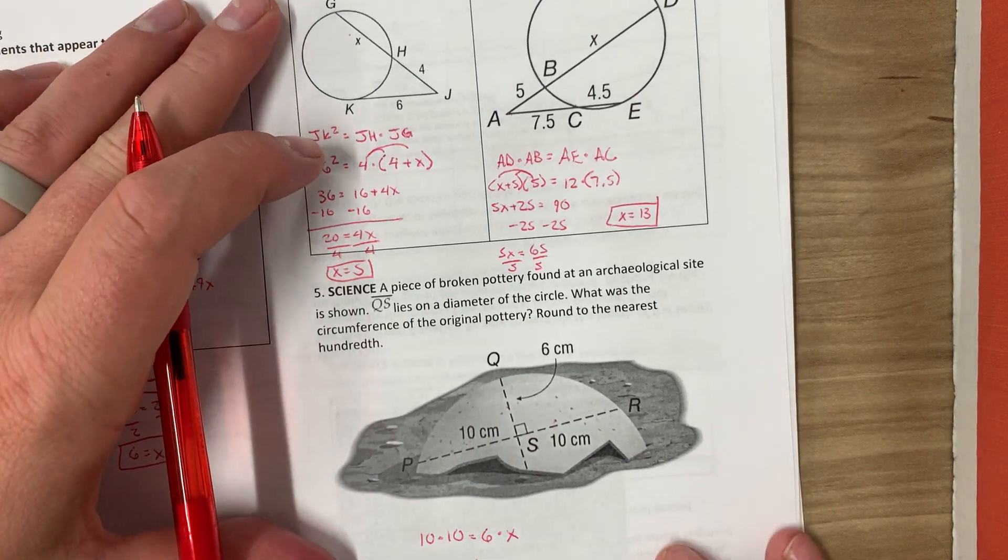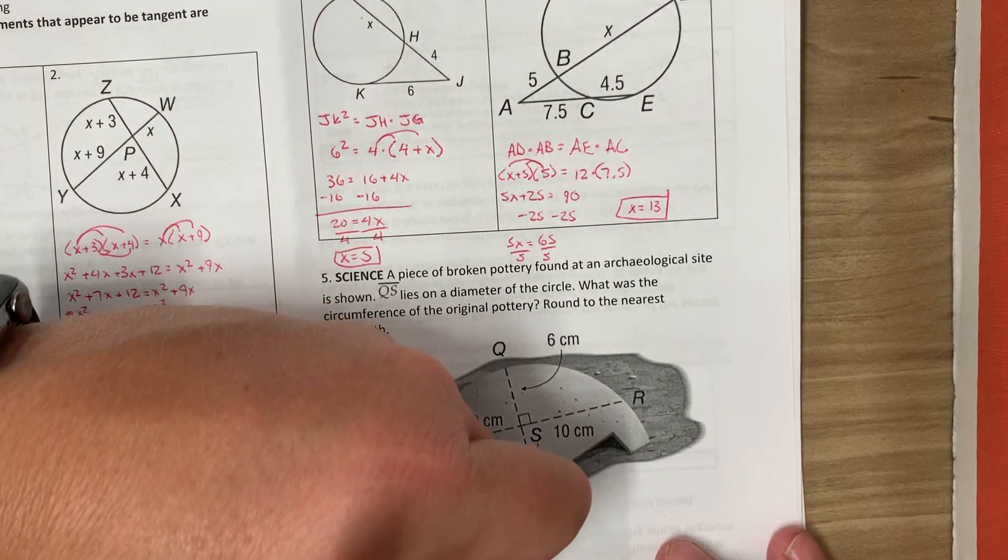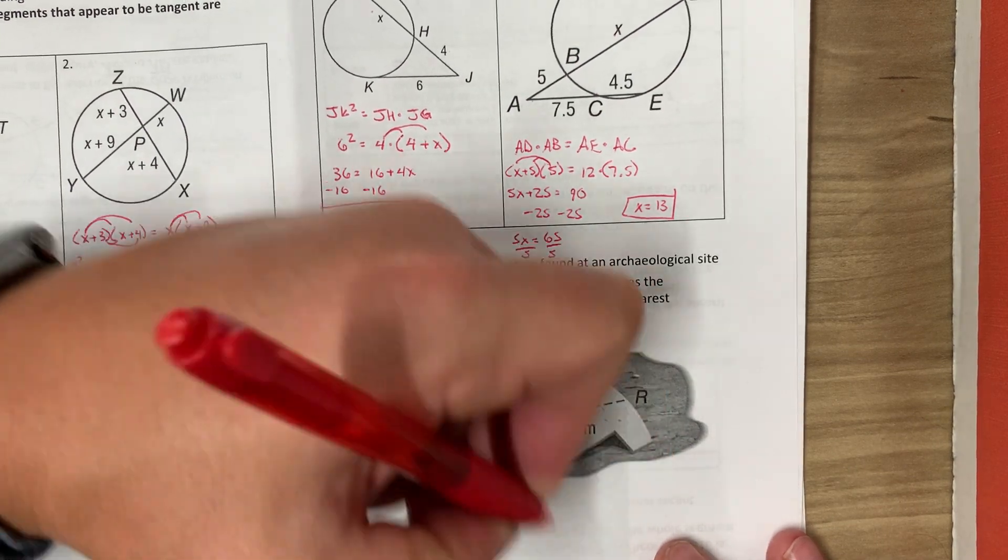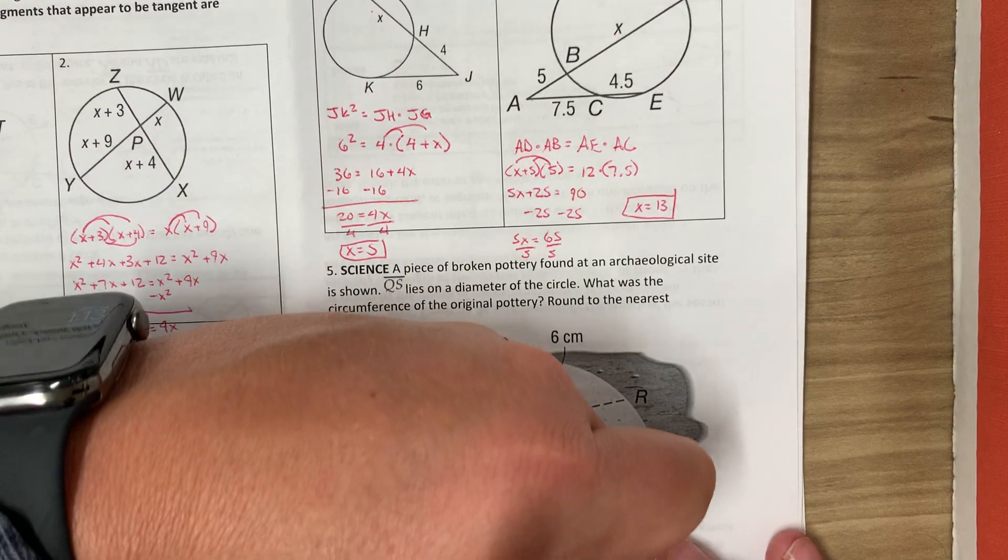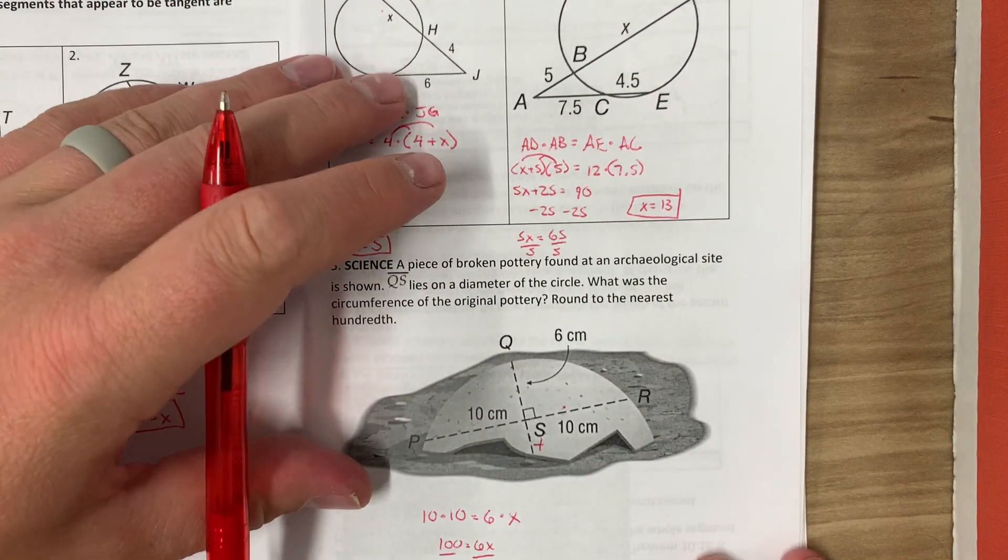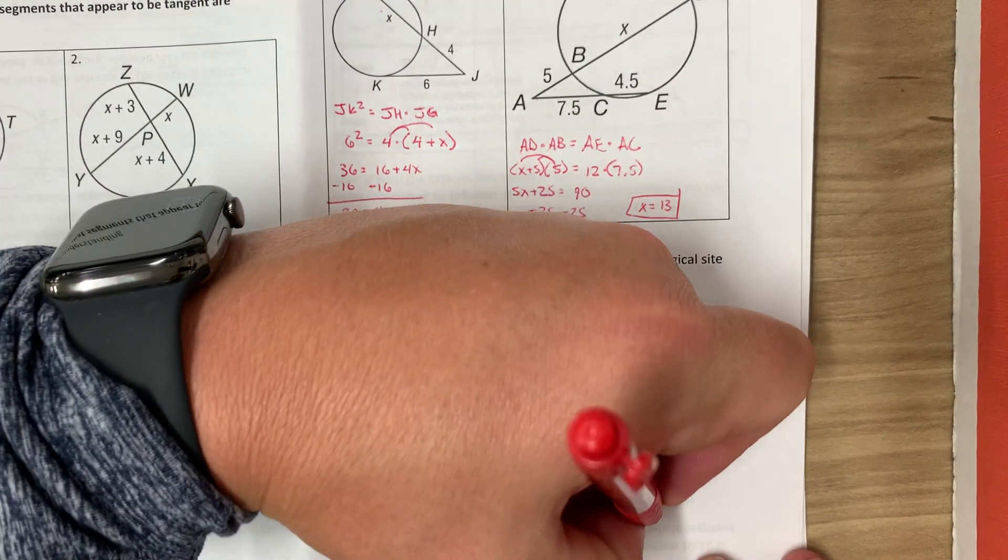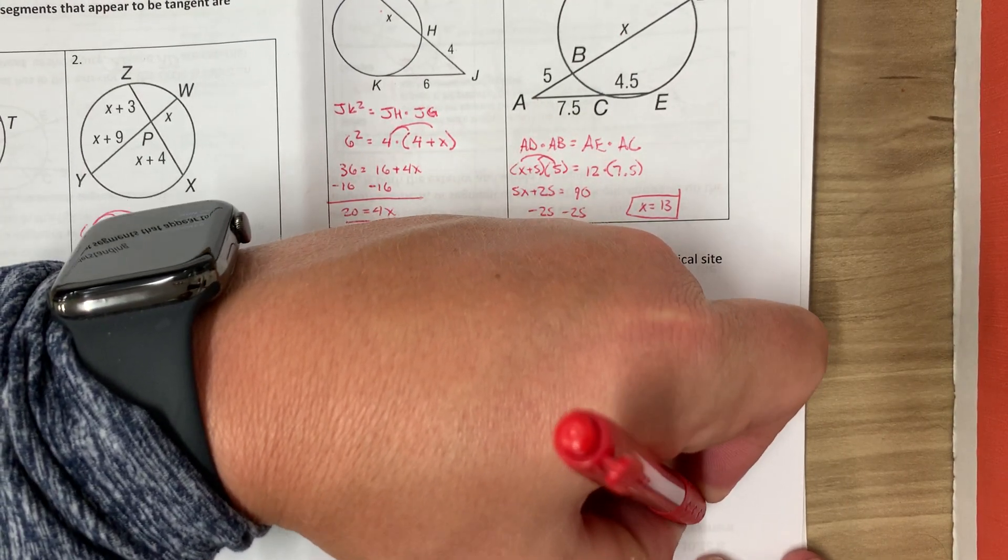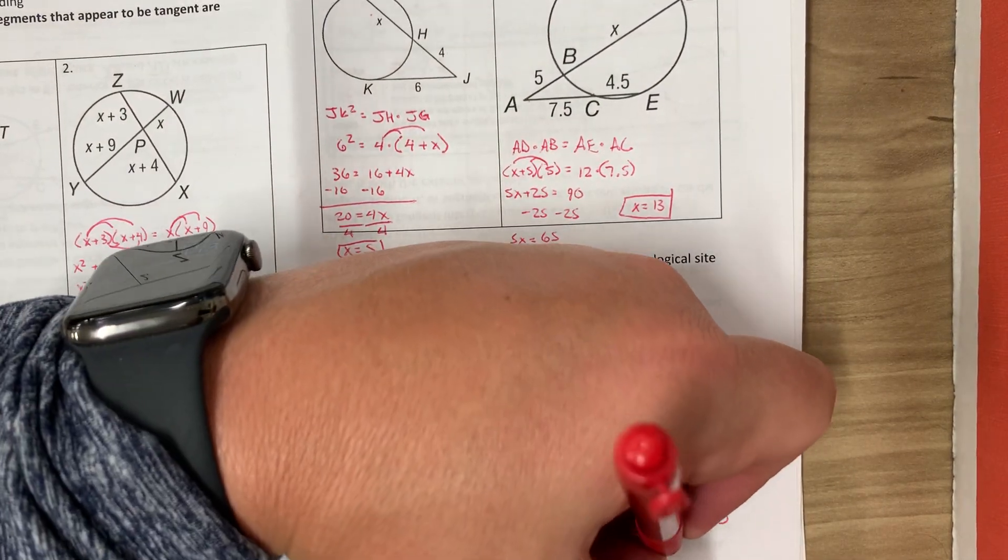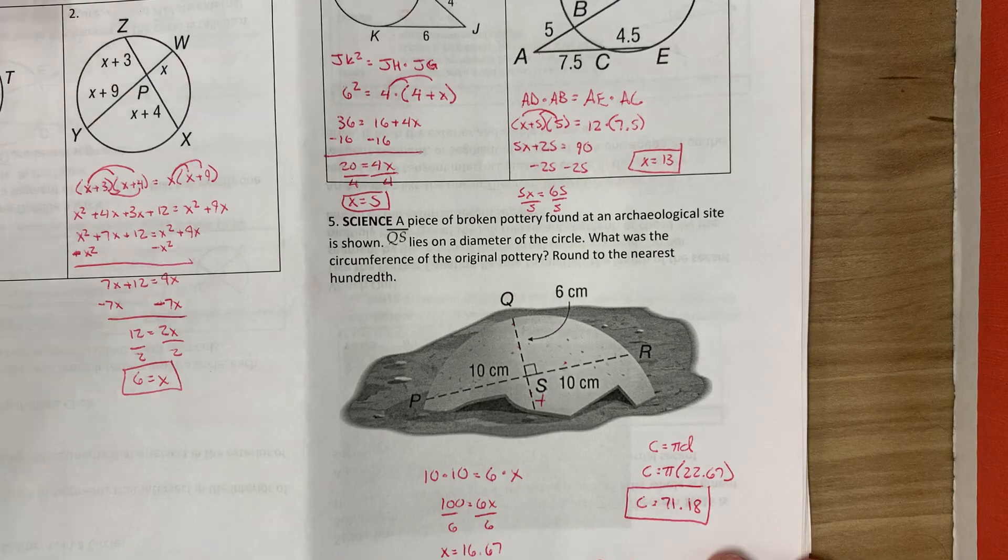So then our diameter, since X is on this side, the broken part, we just get the diameter. Diameter would equal 16.67 that we found for X plus 6, so that would end up equaling 22.67. So then we just use our circumference formula: C equals pi D. C would equal pi times 22.67, so we get 71.18. And that's all for 10.7.